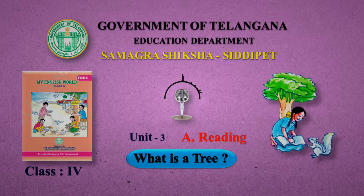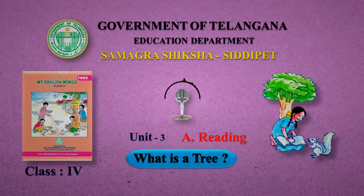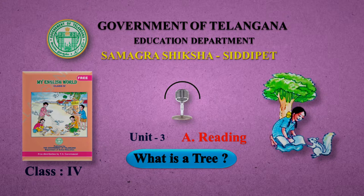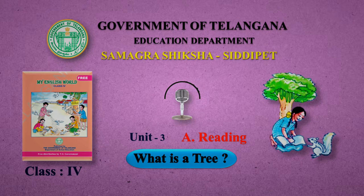Do you remember Amu's friend, Bittu the squirrel? He came running to Amu. Bittu: What are you writing, Amu? Amu: My teacher told me to write about what is a tree. Bittu: For me, a tree is a friend. Amu: This is a good idea. Let's go and ask others. Amu and Bittu set out to ask others what is a tree.